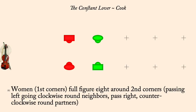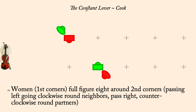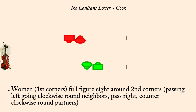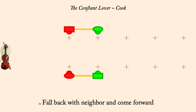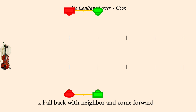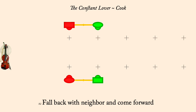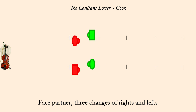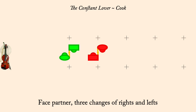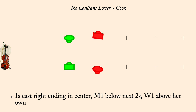First corners, full figure eight around second, starting with neighbor. Fall back with neighbor, come forward. Three changes of rights and lefts. One's cast right into center, man one below next twos, woman one above her twos.